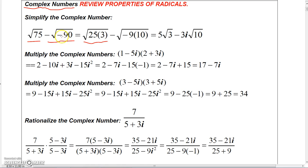...this is negative 90, so I'm going to write it as negative 9 times 10. Now, you might remember that when you take the square root of a negative number, you get an imaginary number, so we'll see that in just a second.